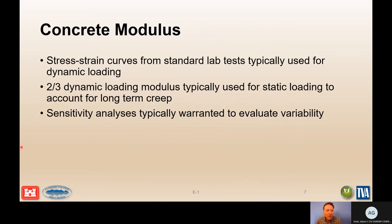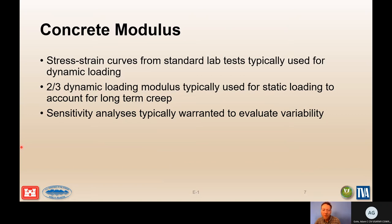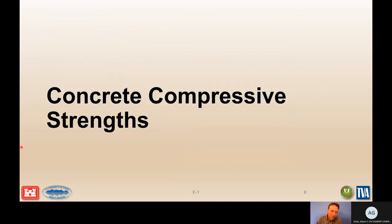Our first material property is concrete modulus. This can be measured by a standard compression test as long as the sample is instrumented to measure strains. Tests are usually run quickly enough to be considered dynamic loading; for static loading, a two-thirds reduction is taken to account for long-term creep. You can also correlate from compressive strength. There can be a lot of variability sample by sample, but once averaged through the structure the variability tightens up, so sensitivity analysis can hone in on a mean value to use.